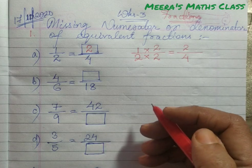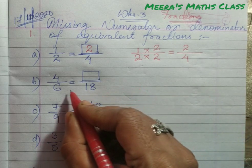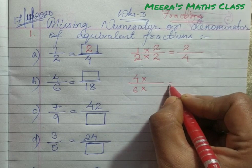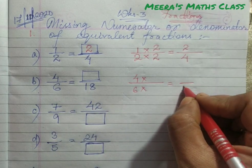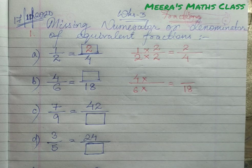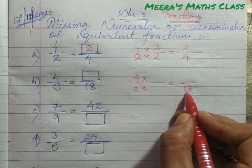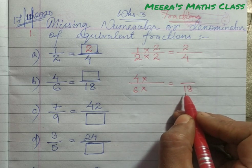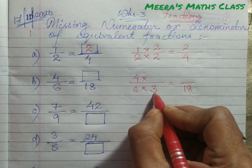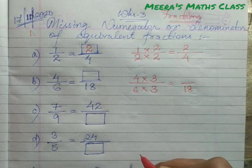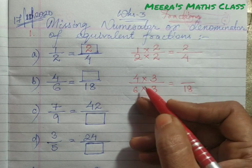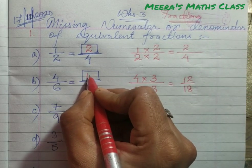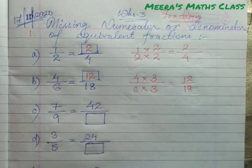Let's move to one more example so it becomes more clear. 18 is given — that means the denominator is given. 4 by 6 into how much will we do? We have to find out. The denominator is 18, which is already given. First, we will find out what we are going to multiply with 6 to get 18. We are going to multiply 3, since 6 threes are 18. The same number 3 we are going to multiply in the numerator: 4 threes are 12. So the missing numerator is 12.